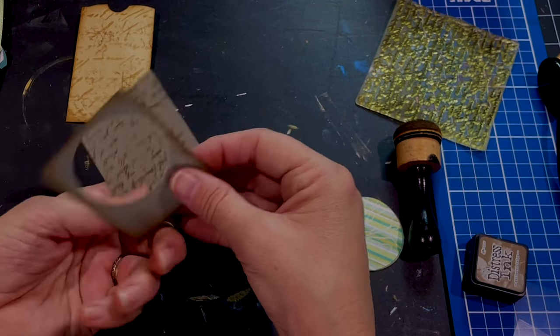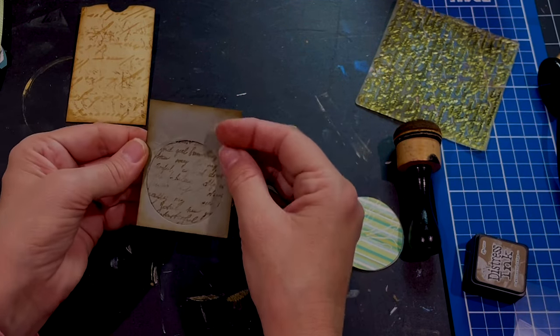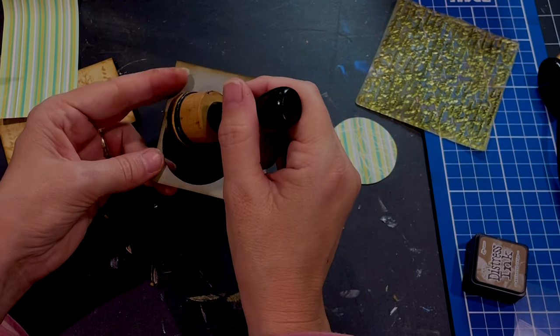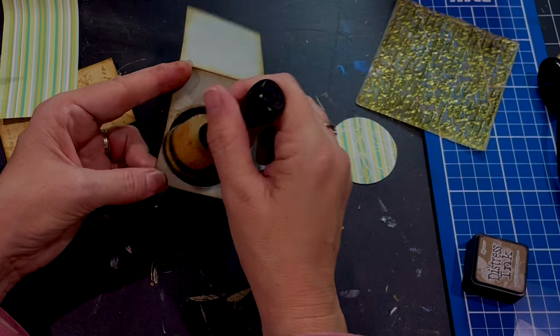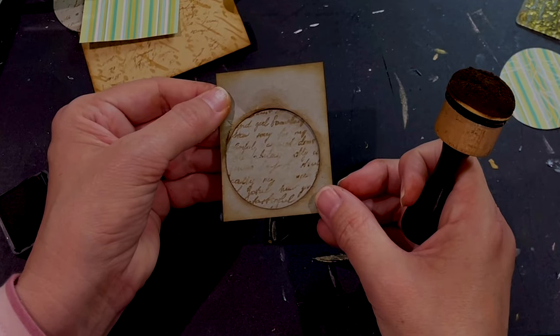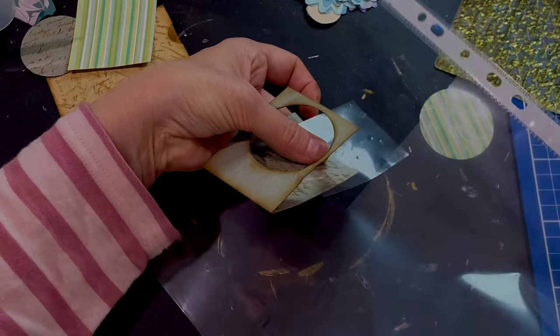But yeah my punches always get stuck. It's really annoying. I'm sure that there are ways to fix that. Now I didn't mind that this was a bit off center. I liked it a little bit skew. I told myself but it did still look really cute. So I thought that was fine.